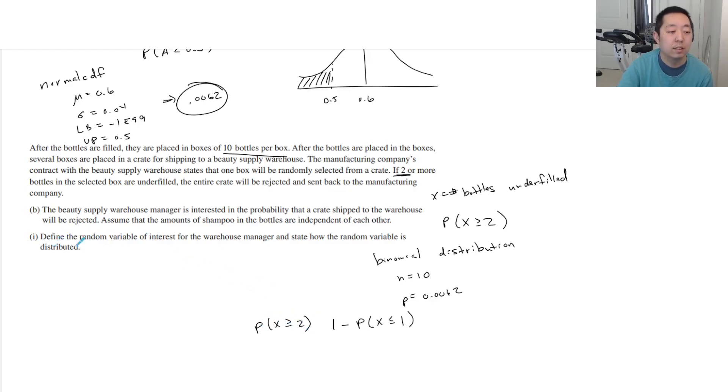So the probability that x is greater than or equal to two... I'm sorry, I'm already doing the probability, but they actually only have binomial distribution. This is part B. The variable of interest is the number of bottles underfilled in a box. So that's my variable, that's my distribution. You always want to say the distribution and the parameters associated with it. So you can say n is 10, p is 0.0062.